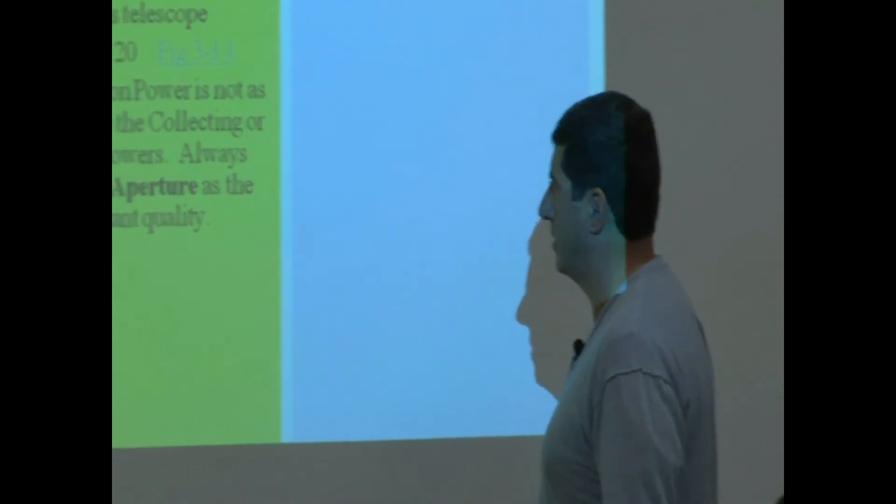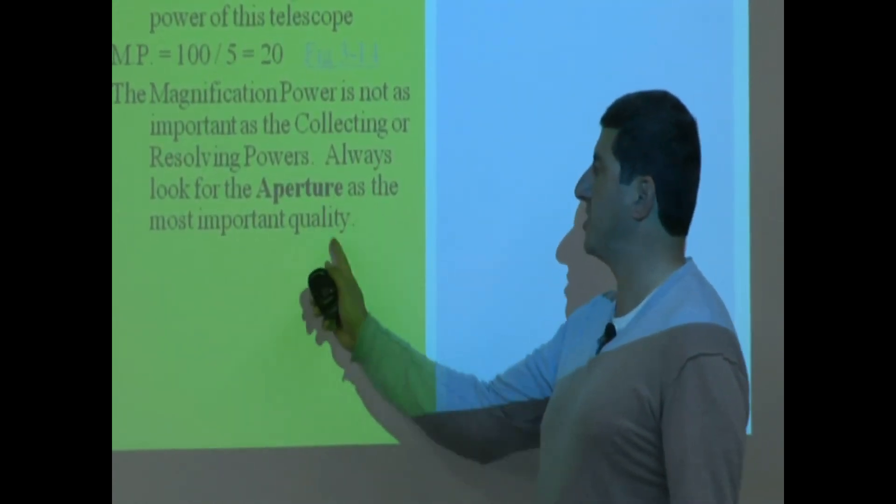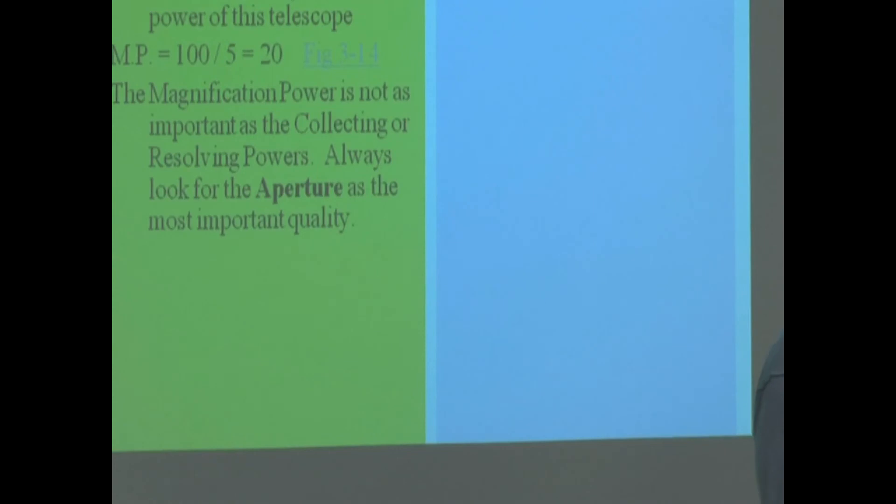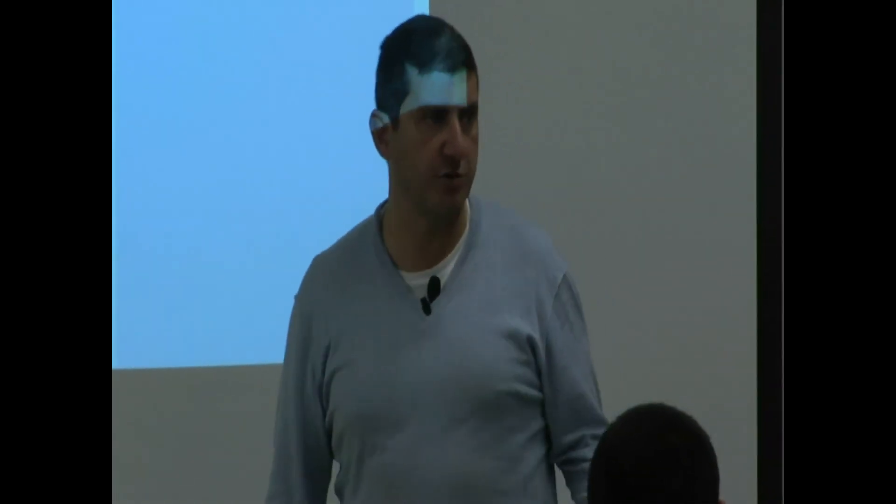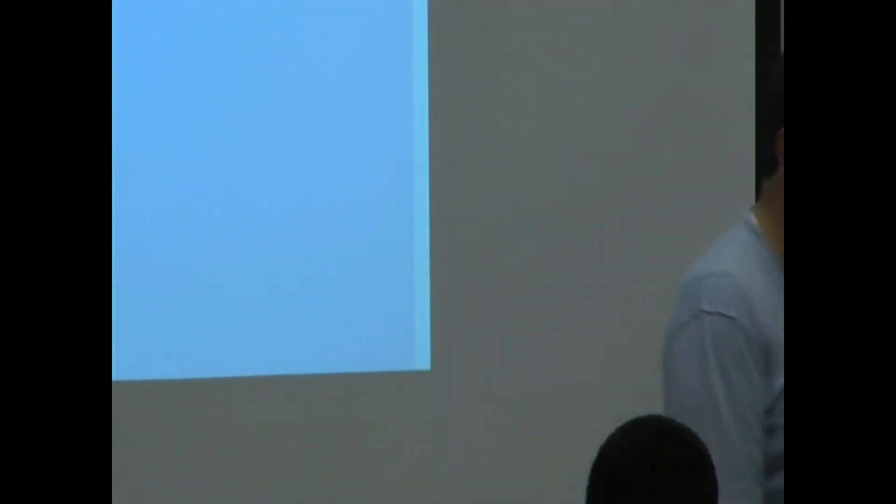So, the magnification power is not as important as the collecting or resolving power. Always look for the aperture as the most important quality of the telescope, because aperture will determine resolving power. It will determine collecting power. It will also indirectly determine the maximum magnification power you can have. So, very important. The other secondary things you can look for are the brand name and all of that other stuff, whether it's a Newtonian telescope or a Cassegrain telescope, and I'll explain that later, what I mean by that.